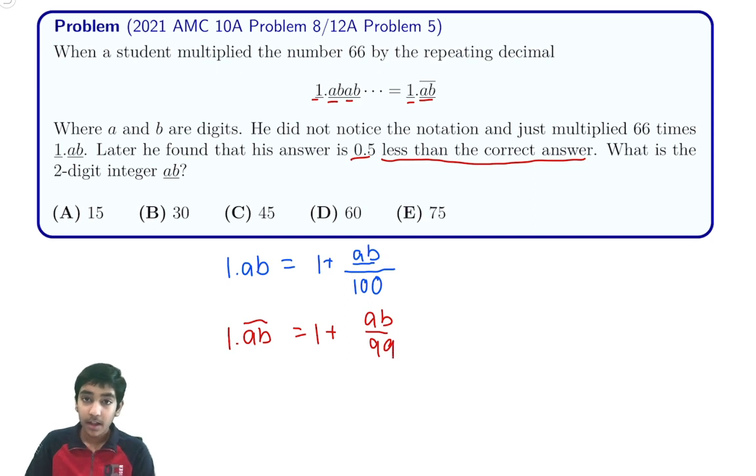So we can see that multiplying 66 by this quantity here, 1 plus AB over 100, we're saying that is 0.5 less, so it's going to be equal to, plus 0.5 is going to be equal to 66 times 1 plus AB over 99.